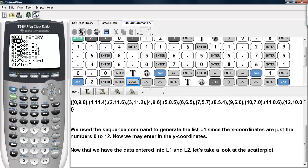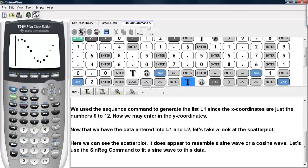Now to size up my window, I'm going to use the zoom stat command. And here we can see the scatter plot, and it does appear to resemble a sine wave or a cosine wave. So we're going to use the sinreg command to fit a sine wave to this data.